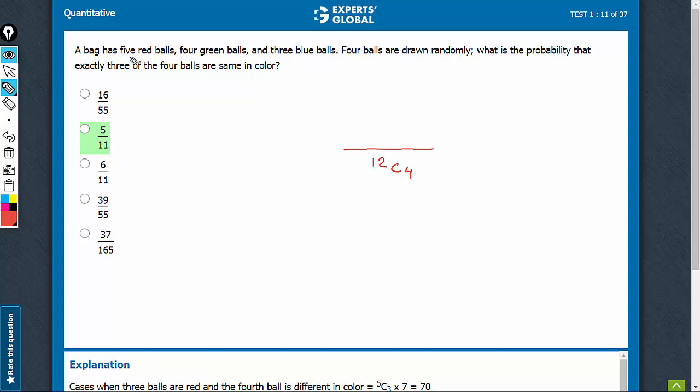First case is when the 3 balls are red. So, out of 5, it could be any 3 red balls, and the 4th ball can be any of the remaining 7 balls. So, 5C3 into 7. Plus the 2nd case is when the 3 balls are green in color. So, 4C3 and the other 4th ball can be any of the remaining 8 balls.